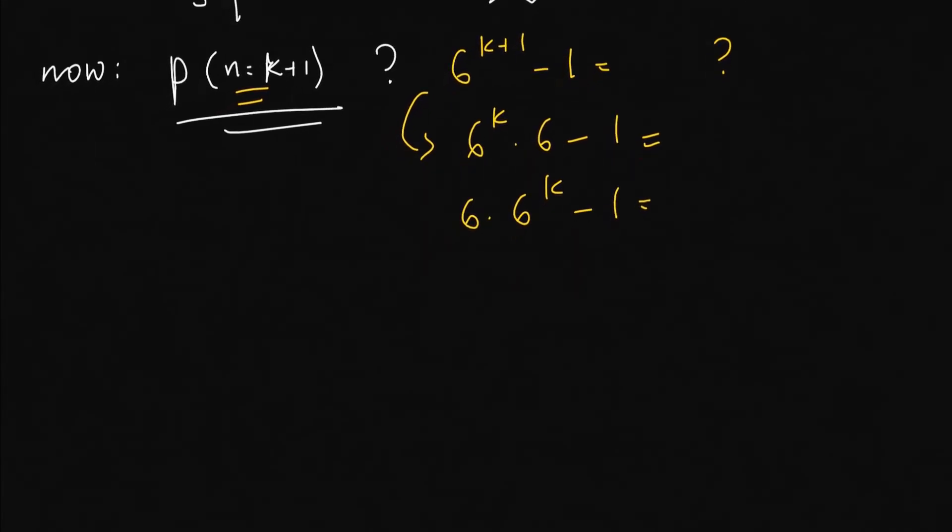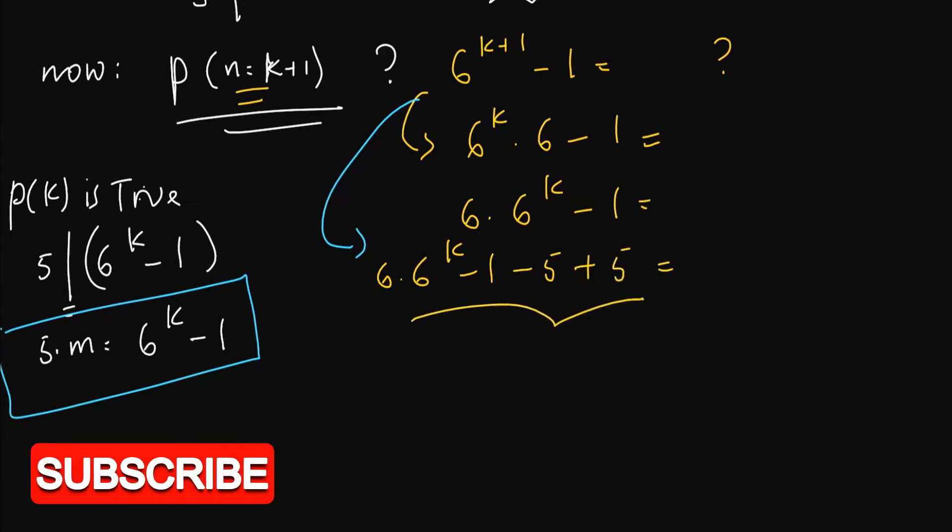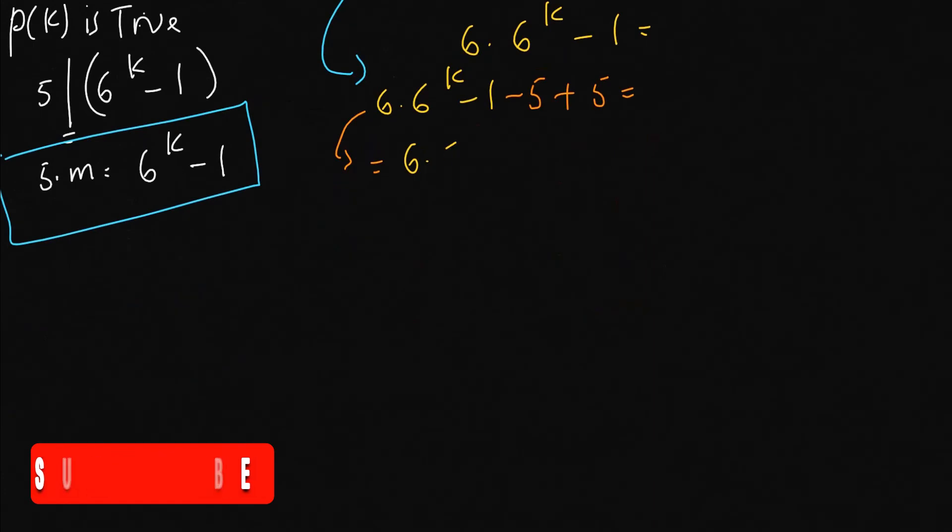P of k is true. And P of k is true means 5 divides 6 to the power of k minus 1. So we do our algebra. This is equal to 6 times 6 to the power of k minus 1. This is equal to 6 times 6 to the power of k minus 1.